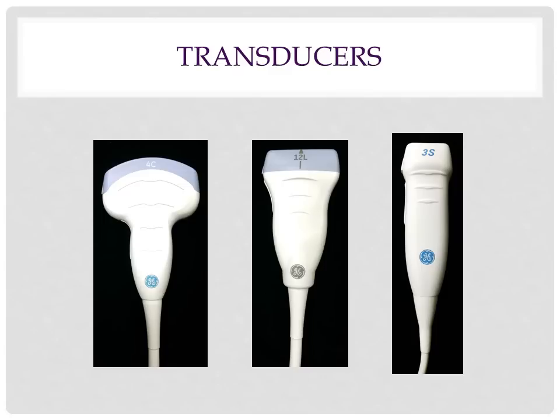Transducers come in many shapes and sizes, and are designed for specific functions. There are three transducers that are used in this lab: the 3S phased array probe, the 4C curvilinear probe, and the 12L linear probe. Each probe will emit a different frequency of sound, optimized for the area of the body on which it will be used.